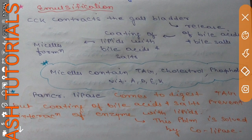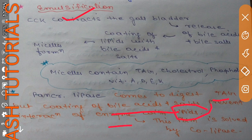Pancreatic lipase will come to digest triacylglycerol, but the coating of bile acids and bile salts from emulsification prevents the interaction of the enzyme with the lipid. This problem is solved by co-lipase: co-lipase interacts with bile acids and bile salts first, which then allows pancreatic lipase to come in contact with the lipids and start its activity.